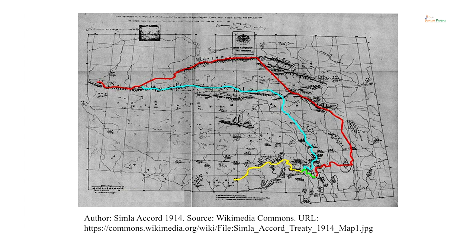The boundary dispute between the two countries preceded both entities coming into existence — that is the Republic of India and the People's Republic of China. The boundary dispute preceded both of them. The boundary dispute basically covers three sectors: the eastern sector, the western sector, and the middle sector. The middle sector is not very significant; mainly the dispute is around the eastern and western sectors.